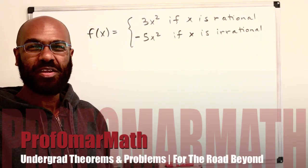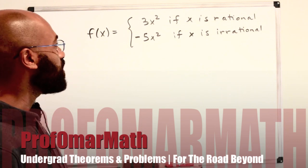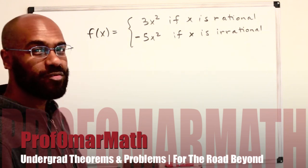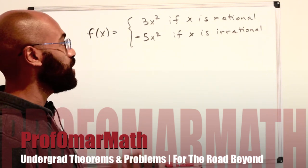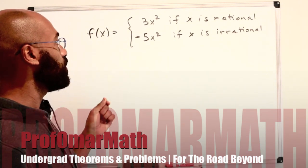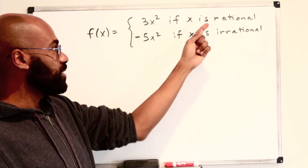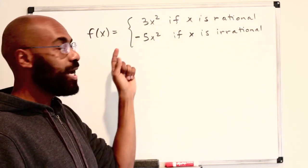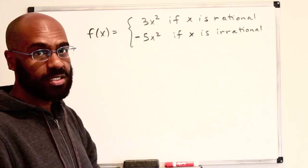Welcome to today's video, I'm Prof Omar. Today we're going to talk about the derivative at x equals zero of this really interesting function — that's 3x squared when x is rational and negative 5x squared when x is irrational.